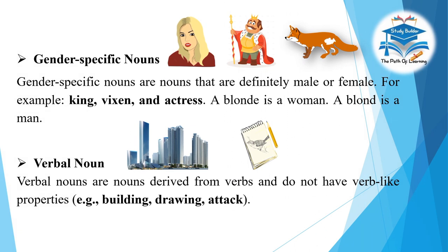Gender-specific nouns: Gender-specific nouns are nouns that are definitely male or female — for example: king, vixen, and actress. Verbal noun: Verbal nouns are nouns derived from verbs and do not have verb-like properties — for example: building, drawing, attack.